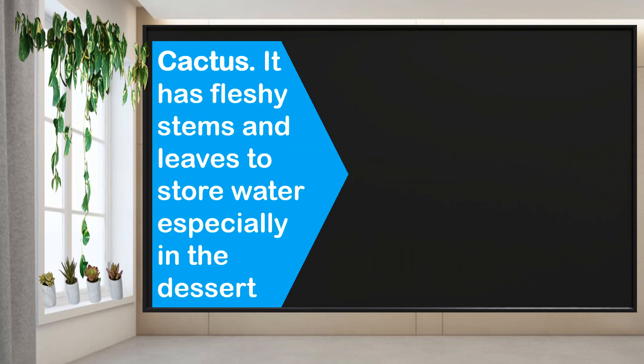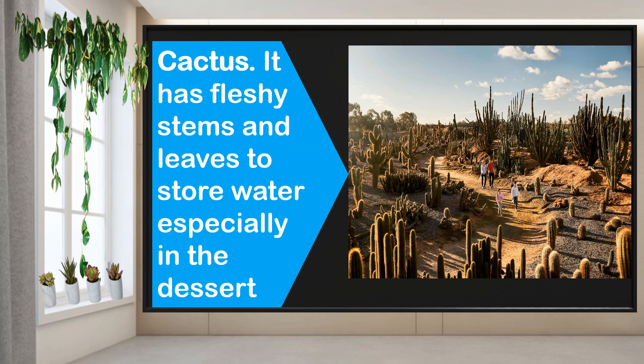Another one is cactus — cactus or cacti. It has fleshy stems and leaves to store water, especially in the desert. Since in the desert there is no water, they can live and wait for the rain, even if it takes a long time.